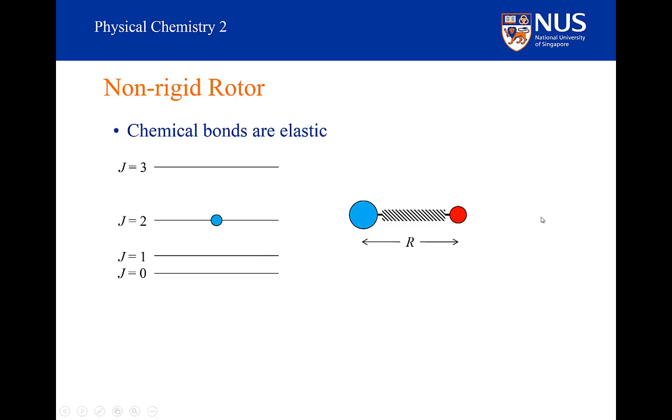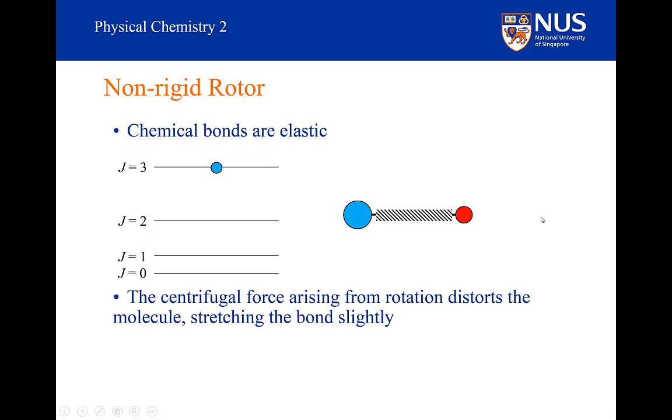If I go to J equals 2, the bond length will be larger because it is rotating faster. The nuclei experience centrifugal force which stretches the bond. If J equals 3, the bond length is even longer because it is rotating even faster. Centrifugal force arising from rotation distorts the molecule, stretching the bond slightly.